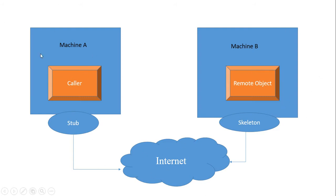So basically, this is how RMI — Remote Method Invocation — works. If the code is not on the client machine, the method invocation is done through RMI. There are two key objects: stub and skeleton, which provide intermediation between client and server.